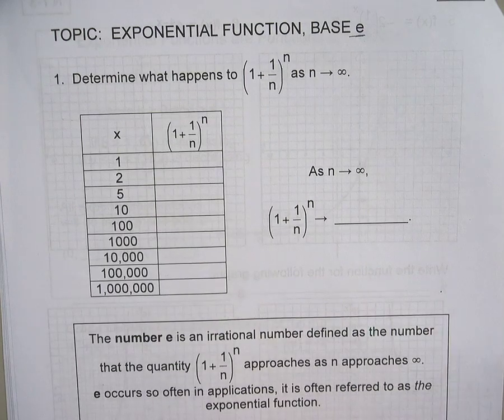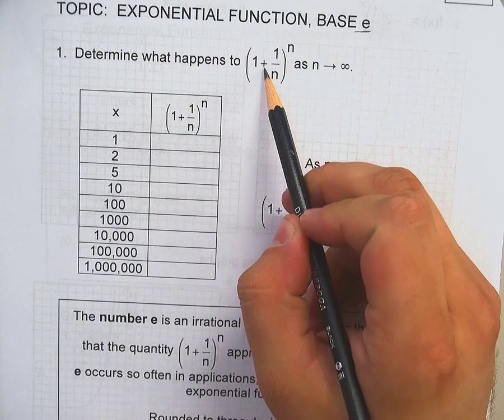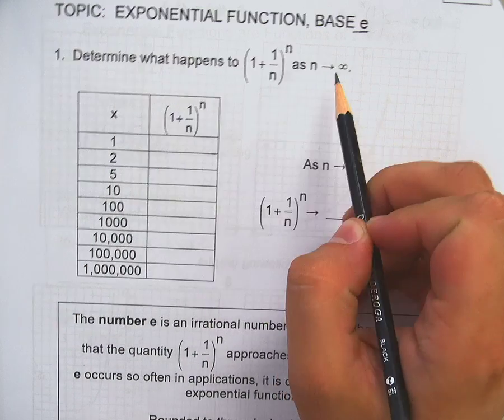Base E. E is an amazing thing. E is this pretty little thing that happens when (1 + 1/n) to the n goes to infinity.